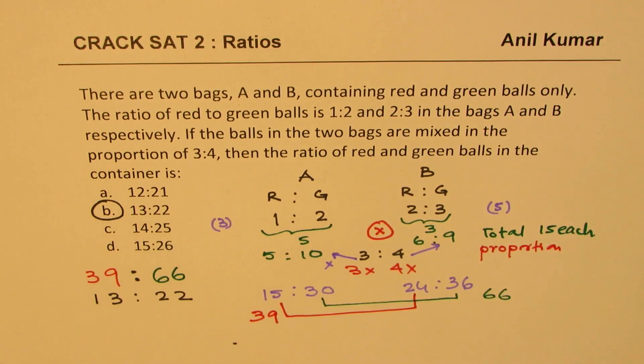Does it make sense to you? So that is how we could actually solve the question based on ratios. So let's recall what we did. So we have two bags, A and B. Whenever I say red and green balls are in the ratio of 1 is to 2, that means for every three ball, 1 is red and 2 is green. Here for every four balls taken, 2 are red and 3 are green.